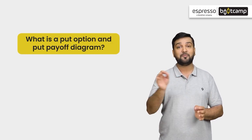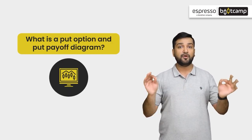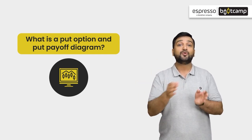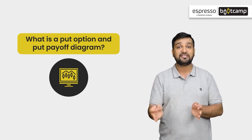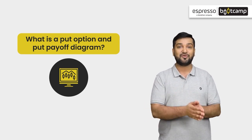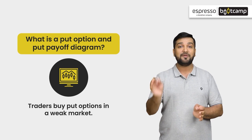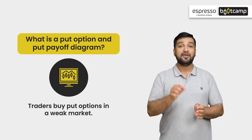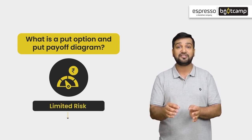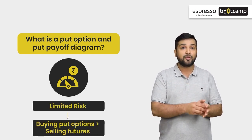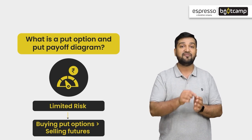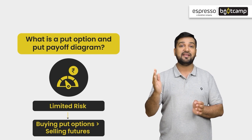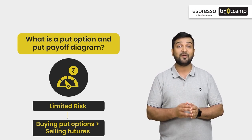First of all, let's know what is put option and put option pay off diagram. Put option is basically an option contract which gives you the right to go short on its underlying stock or index without actually shorting the stock or index. Traders put option ko tabhi buy karate hain jab woh market me kaafi weakness expect kar rahe ho. Risk limited honae ki wajay se, most of the traders prefers to buy put option rather than selling futures. If you have bought the put option and price rise karne lagti hai, toh you can also face significant losses.